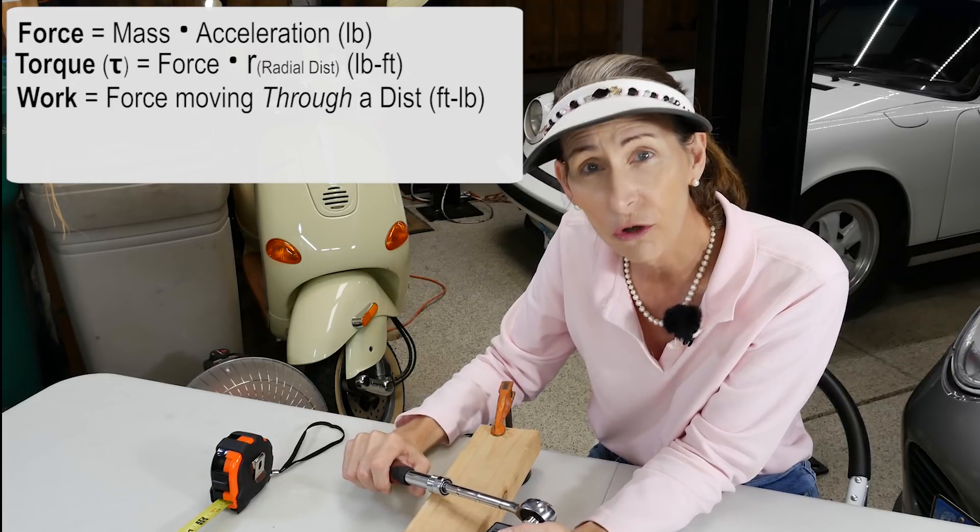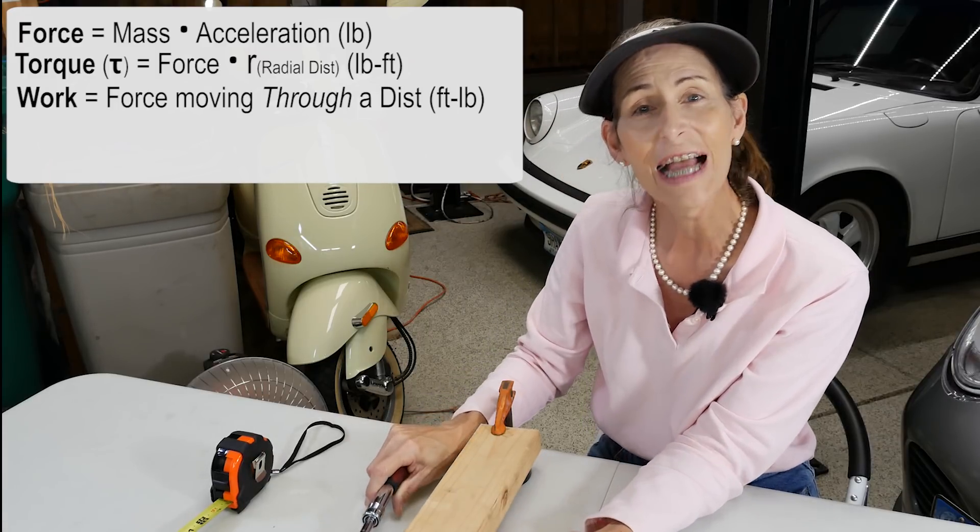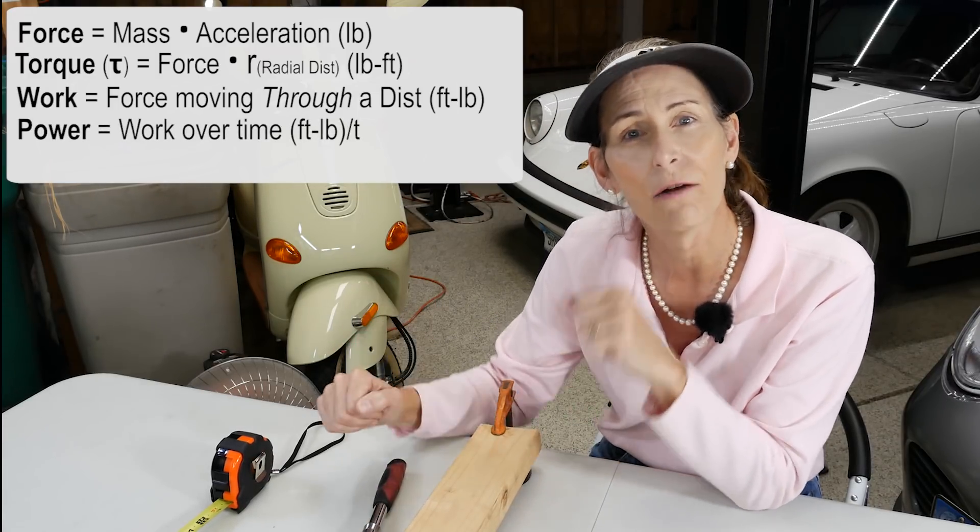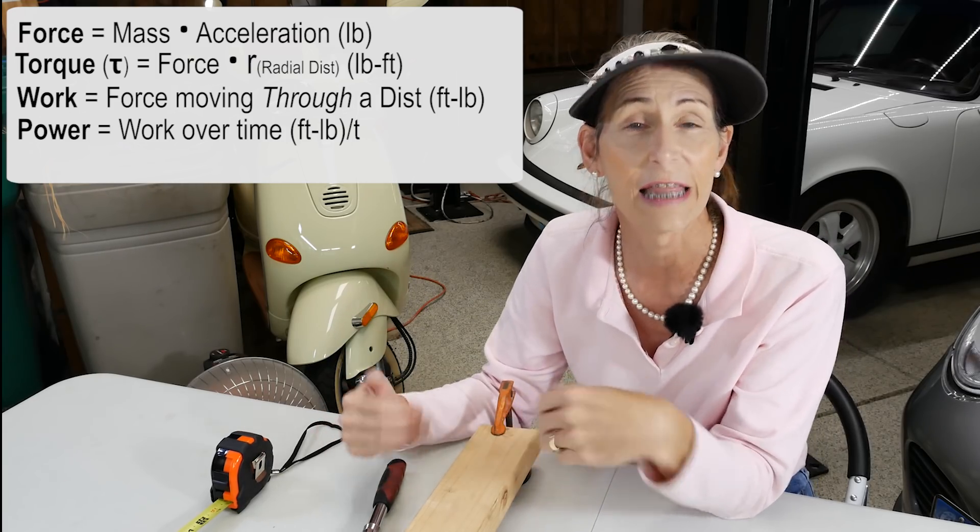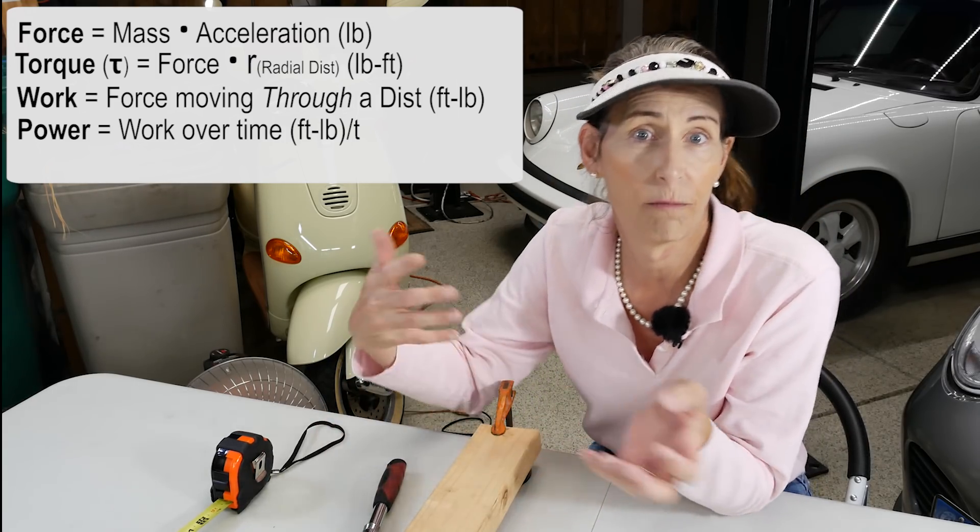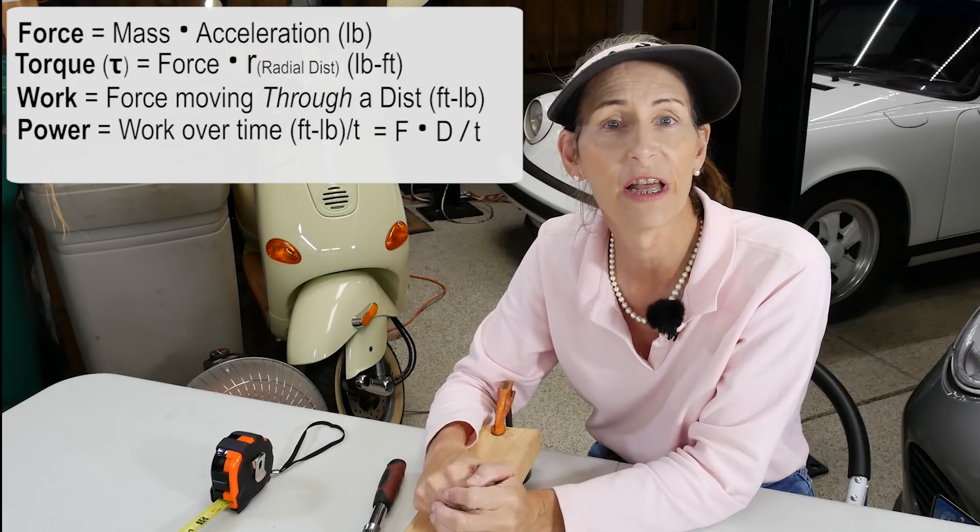So work is force through a distance. Then the last one is the rate in which we perform work, and that's power. So that's just work over time. Simple enough.